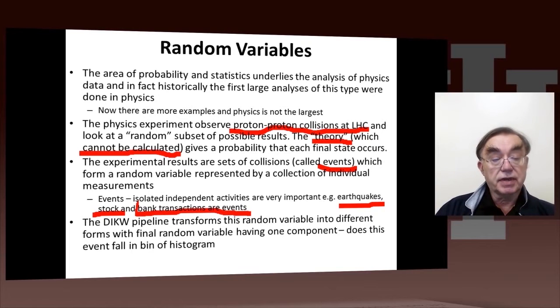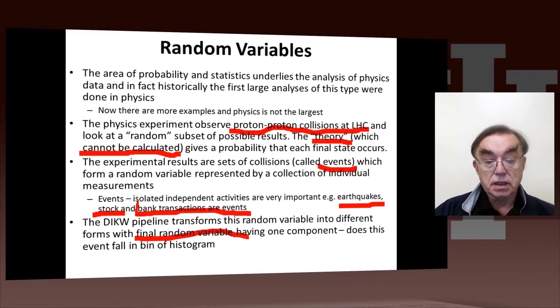In each case, when we have these events, we have a data, information, knowledge, wisdom pipeline that tends to take these random variables, which are associated with events, and transform them from one form into another. And in the case of the physics, the final random variable is just one component. Does the event fall in a particular bin of a histogram?